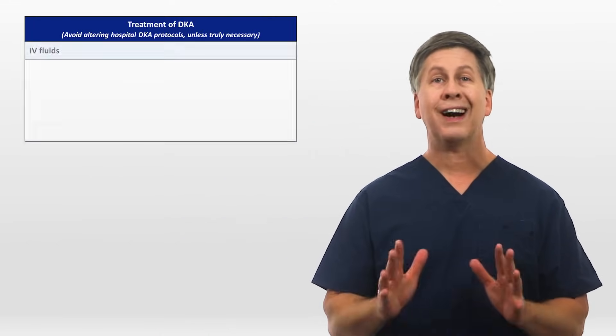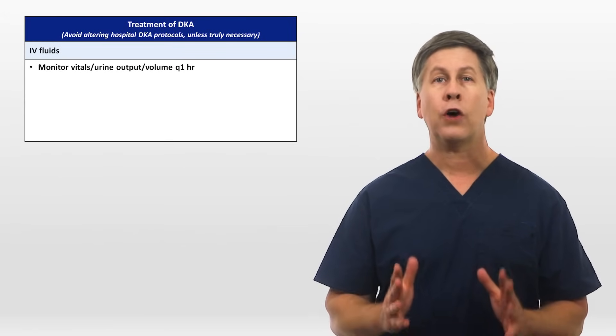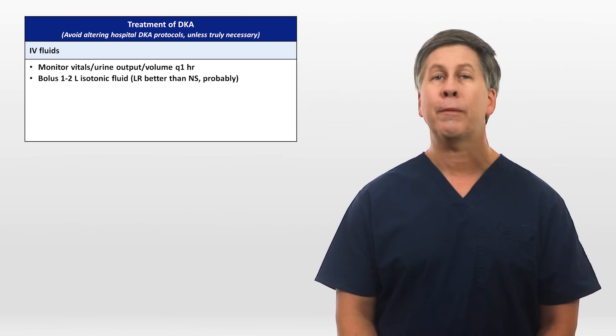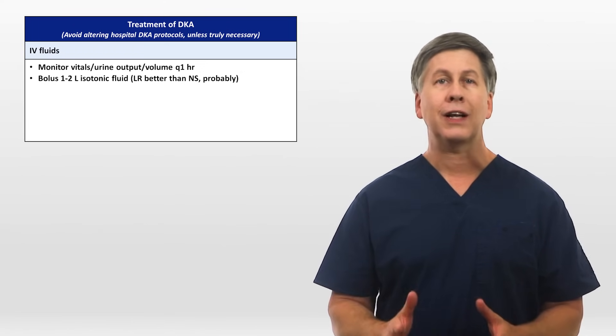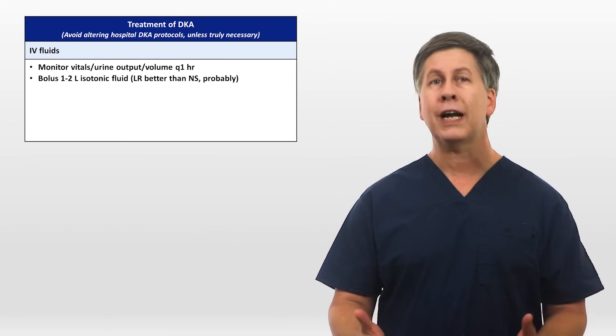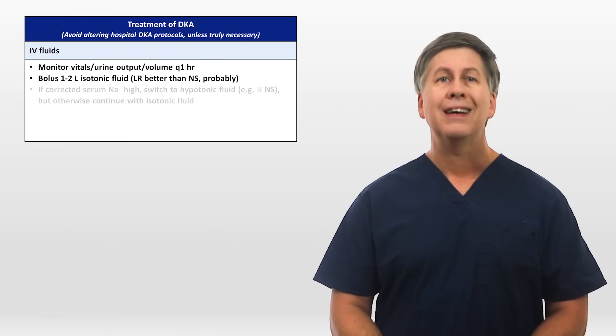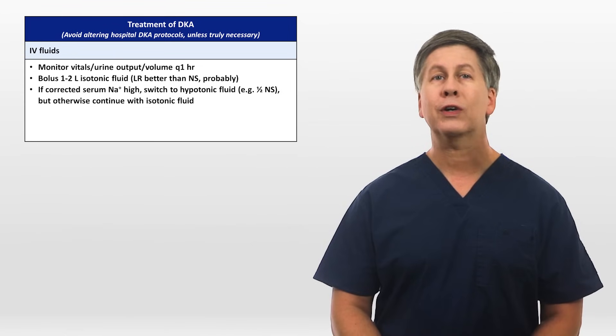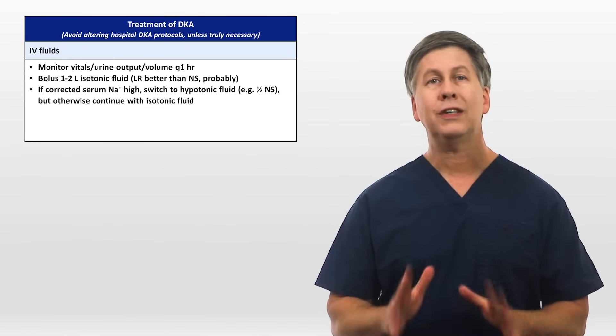These situations include times when the protocol isn't working or when the patient has another concurrent illness that makes the standard protocol potentially dangerous, such as profound electrolyte abnormalities or advanced heart failure. Regarding IV fluids, vitals, urine output, and overall volume status should be monitored hourly. The patient should typically be bolused 1-2 liters of isotonic fluid at the time of presentation. There is a general sense that lactated Ringer's is probably modestly better than normal saline, if not for any other reason than because normal saline prolongs the acidemia. If the serum sodium corrected for the degree of hyperglycemia is high, after bolusing, switch to hypotonic fluid for continued volume repletion, but otherwise continue with isotonic fluid.